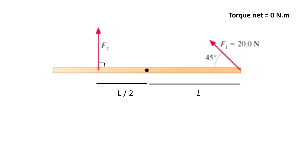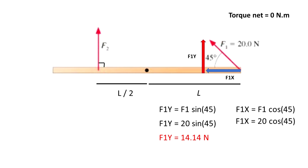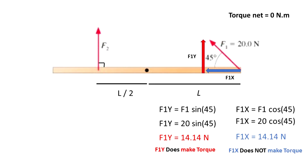Going back to force 1, we can observe that it is broken into components: the F1x component going in the negative x direction and the F1y component going upwards in the positive y direction. The y component of force 1 is defined as the magnitude of force 1 multiplied by the sine of 45 degrees. In our case, F1y is equal to 20 times sine of 45, which simplifies to 14.14 Newtons. The F1x component going directly to the left is the magnitude of force 1 times cosine of 45, which also simplifies to 14.14 Newtons.